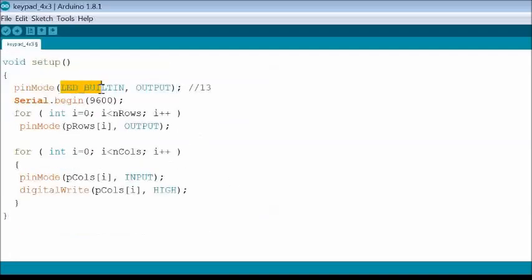Now, in setup function, initiate built-in LED as status indicator and set serial connection with 9600 baud rate. Set all row pins as output using pin mode function. Similarly, set all column pins as input and pulled high using pin mode and digital write functions.